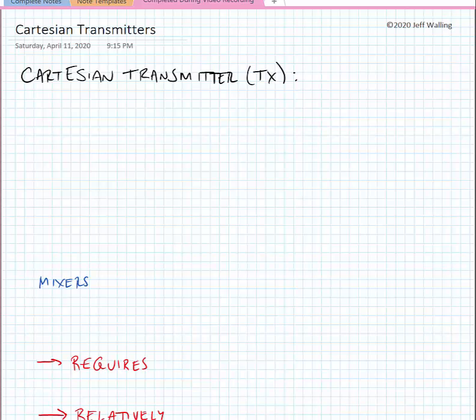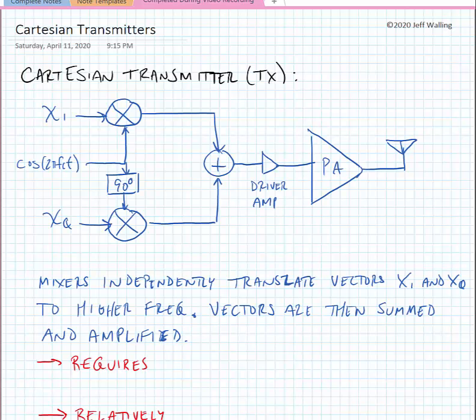We'll first begin by talking about a cartesian transmitter as this is the more common transmitter architecture that's used. In the cartesian transmitter we have two orthogonal vectors xi and xq that are independently translated up to a high frequency and then summed and amplified.